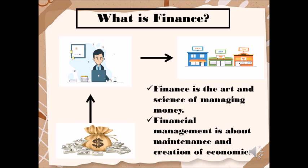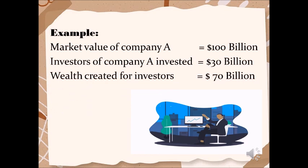What is wealth? Let's take an example. Let's say the market value of company A is $100 billion. Investors of company A altogether invested $30 billion. So, taking $100 billion minus $30 billion, you will get $70 billion. This amount of money is what we call wealth created for investors. Shareholders only paid $30 billion to buy shares. Of course, this is going to be a good sign for investors as the value of the company has increased.